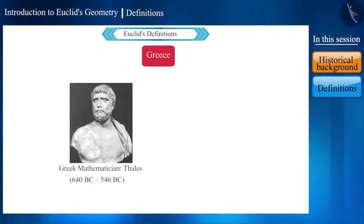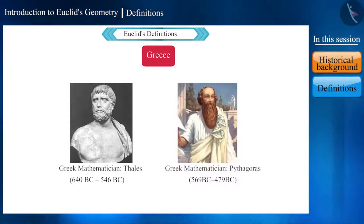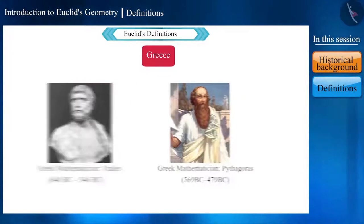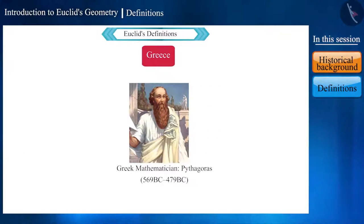You would have heard the name of Greek mathematician Pythagoras. He was Thales' disciple. Pythagoras and his comrades together discovered many geometrical properties and developed the principles of geometry.